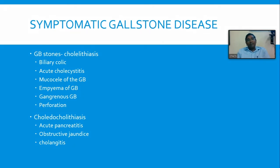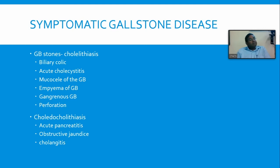The gallbladder is supplied by the cystic artery, which is an end artery in about 50% of cases. Most stones causing problems are in Hartmann's pouch, and when there is inflammation, thrombosis of the cystic artery can occur, leading to gangrenous gallbladder — more commonly seen among diabetic patients and vascular patients. This may lead to perforation, peritonitis, and if not treated early, death. So biliary colic is the commonest symptomatic gallstone presentation, followed by acute cholecystitis. Mucocele, empyema, gangrene, and perforation occur especially in immunocompromised and diabetic patients.